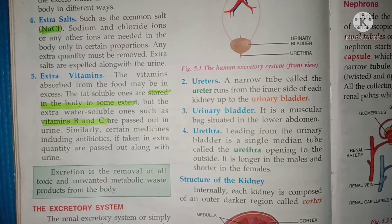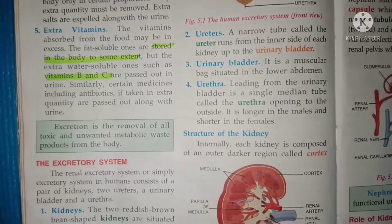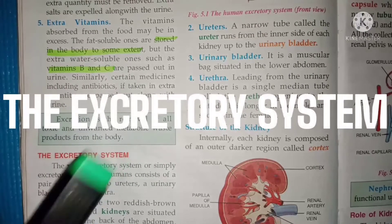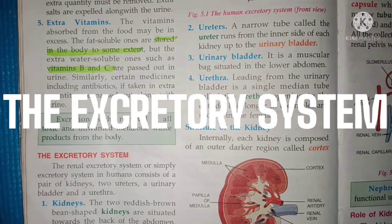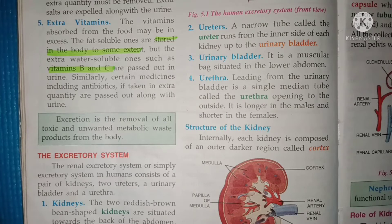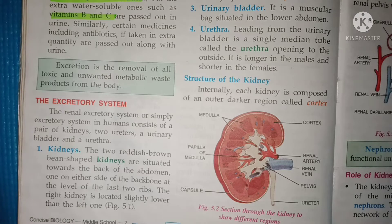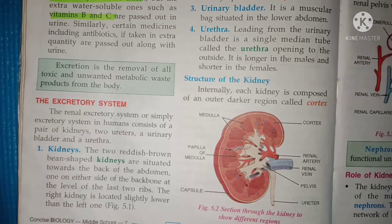The excretory system, also known as the renal excretory system, consists of a pair of kidneys, two ureters, a urinary bladder, and a urethra. Let's learn about the kidneys first. Kidneys are reddish-brown, bean-shaped organs situated towards the back of the abdomen, one on either side of the backbone.